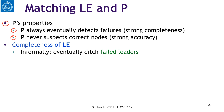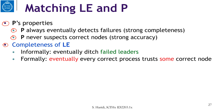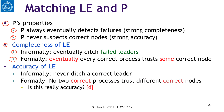Let us now look at the completeness of LE. Informally, LE eventually ditches failed leaders. Formally, we can say that eventually every correct process trusts some correct process. The accuracy of LE, informally, means never leave or ditch a correct leader. And formally, no two correct processes trust different correct processes.